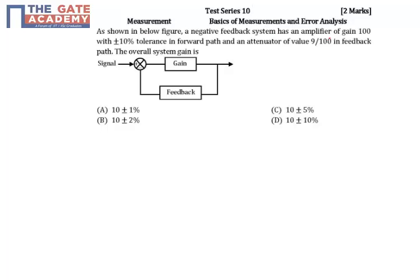He is asking what is the overall system gain with error. Because whenever there is an error in amplifier gain, obviously the overall system gain is also having some error. So he is asking what is that gain with error.